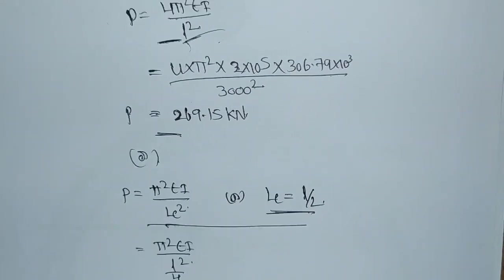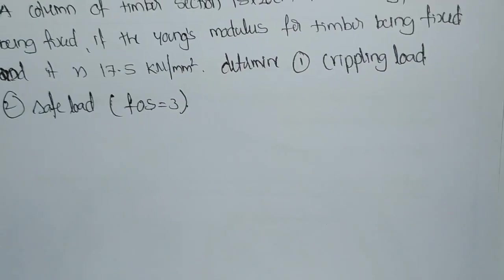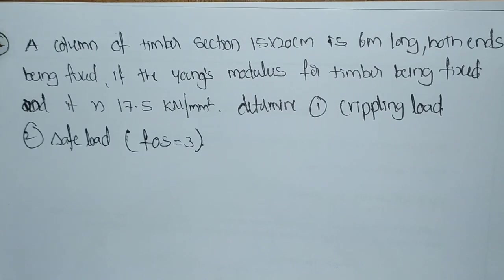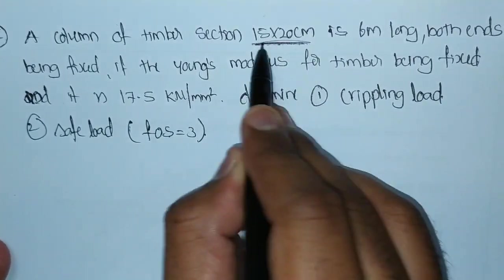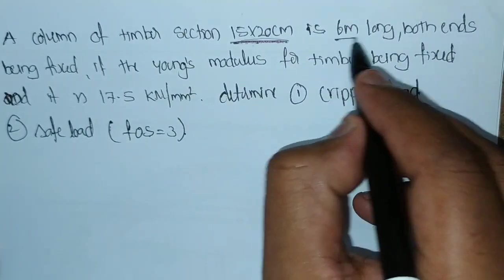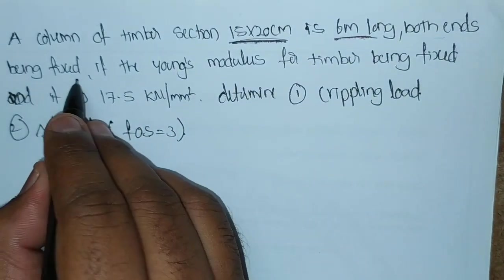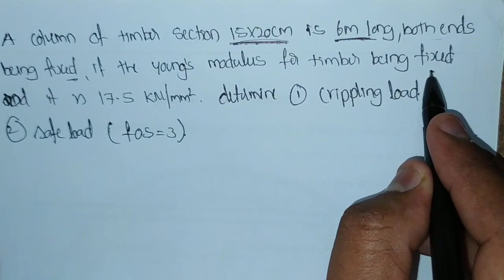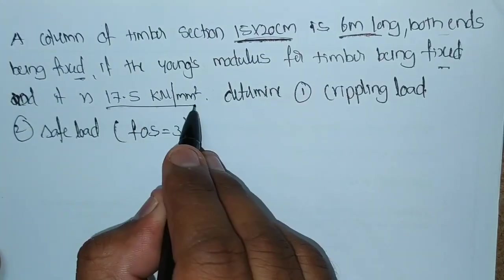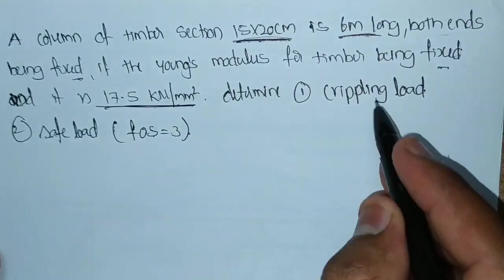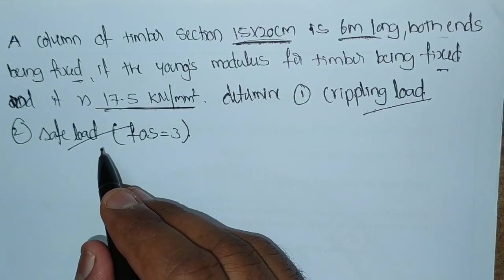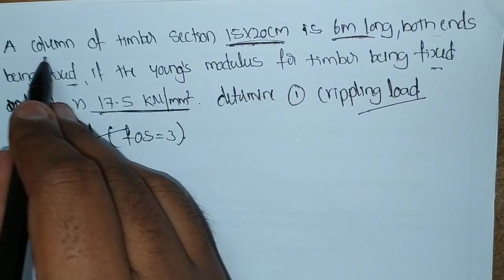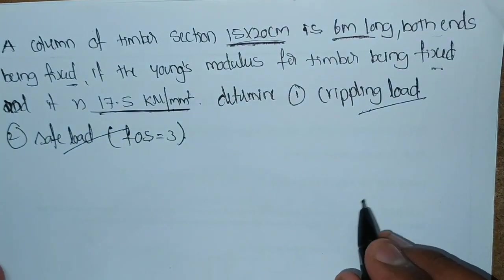Like this, the crippling loads we have to find out for different types of sections if it is a circular section. Now we will find out for a column section which is going to have different types of section properties. For this, I have taken an example. A column of timber section 15 by 20 centimeters of cross section, 6 meters long, both ends are fixed condition.